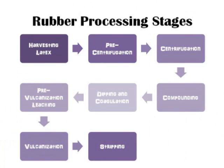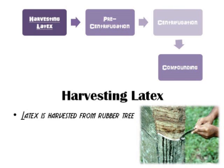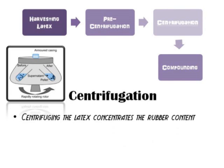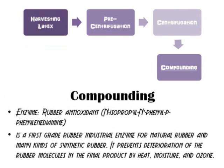There are eight stages in rubber processing. The first stage is harvesting latex from a rubber tree. In the pre-centrifugation step, a proteolytic enzyme is used to break down proteins in the mix, reducing the amount of available proteins in the final products. After centrifuging the rubber content, during compounding, a rubber antioxidant is used as an enzyme to prevent deterioration of rubber molecules in the final products by heat, moisture, and ozone.